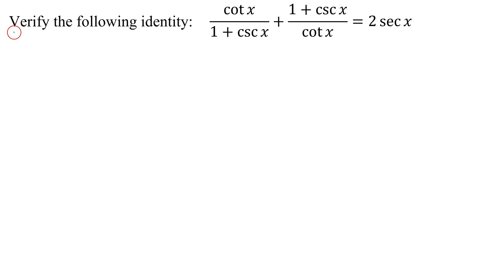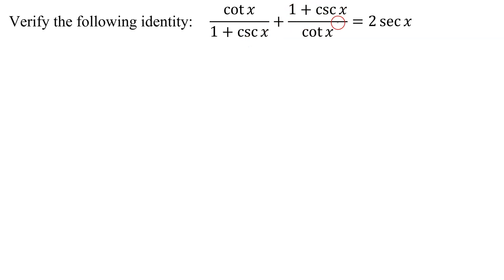In this example, I need to verify the following identity: the cotangent of x divided by 1 plus the cosecant of x, plus 1 plus the cosecant of x divided by the cotangent of x, equals 2 times the secant of x.